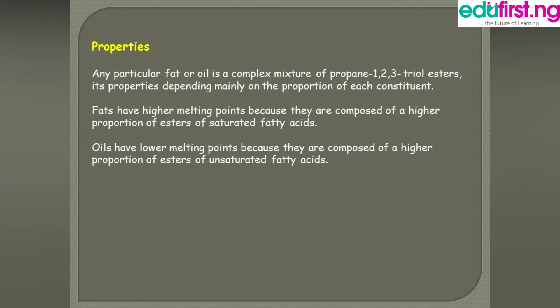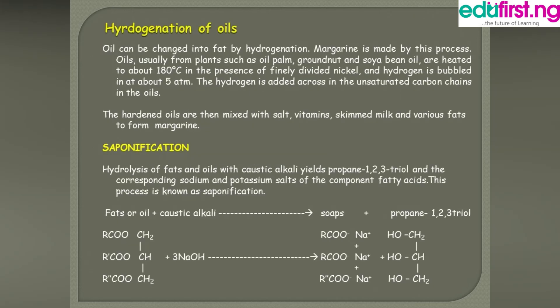Now, properties of fats and oils. Any particular fat or oil is a complex mixture of propane-1,2,3-triol esters. Its properties depend mainly on the proportion of each constituent. Fats have higher melting points because they are composed of a higher proportion of esters of saturated fatty acids, while oils have lower melting points because they are composed of a higher proportion of esters of unsaturated fatty acids.